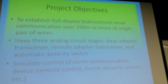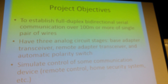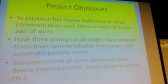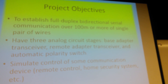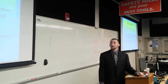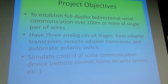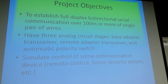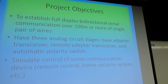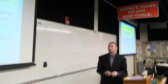The objective of this project is to establish full duplex bi-directional serial communication over 100 meters of a single pair of wires. I got a 500-foot spool of wire. I have three analog circuit stages: a base adapter transceiver, a remote adapter transceiver, and an automatic polarity switch. The automatic polarity switch is not exactly necessary — it's just a bonus in case someone switches the positive and negative wires. It uses four 15-volt zener diodes and four N-channel and P-channel MOSFETs to automatically give you correct polarity no matter which way the wires are connected.